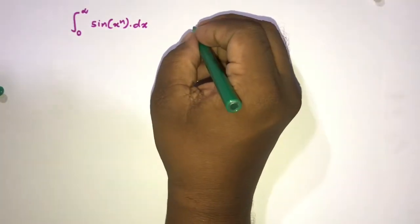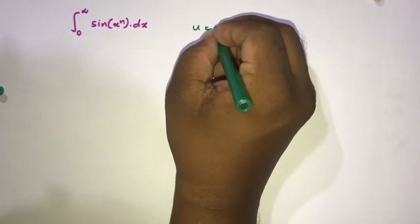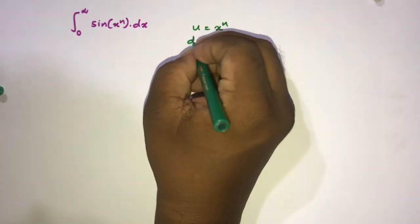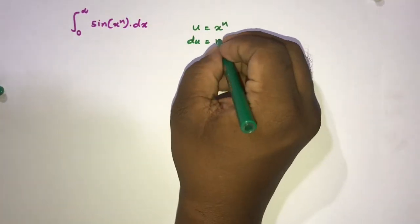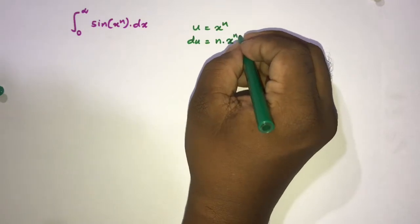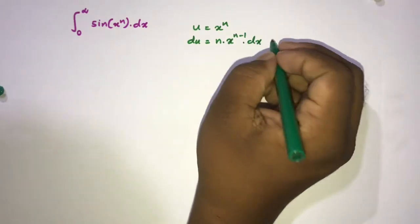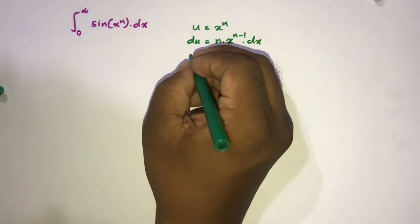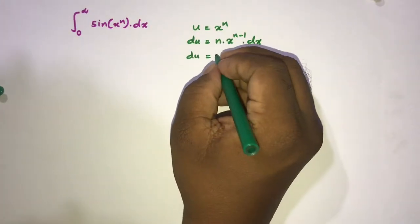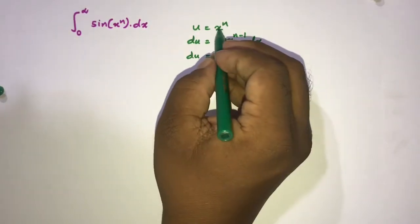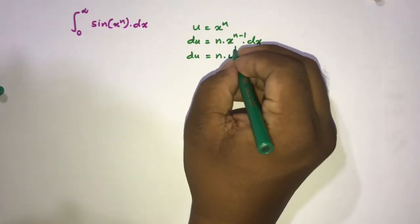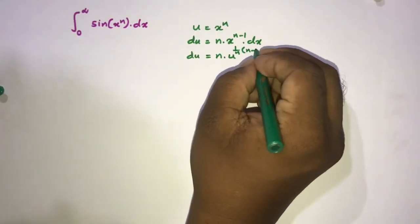We take u equal to x to the n. Now differentiate, so du is equal to n times x raised to the n minus 1 dx. We can simplify: du is equal to n times, and we know x is equal to u raised to the 1 over n, so we have 1 over n here.